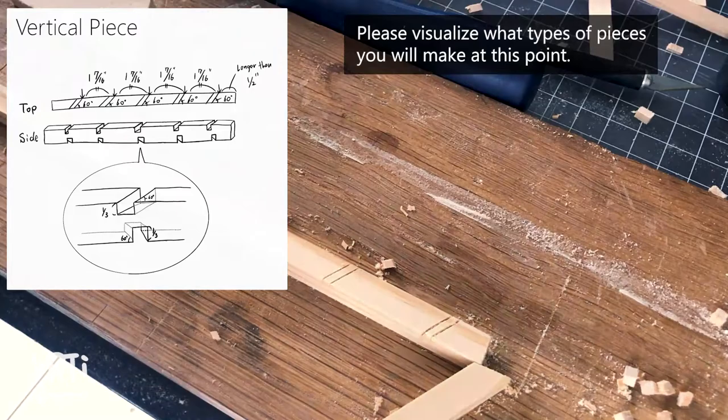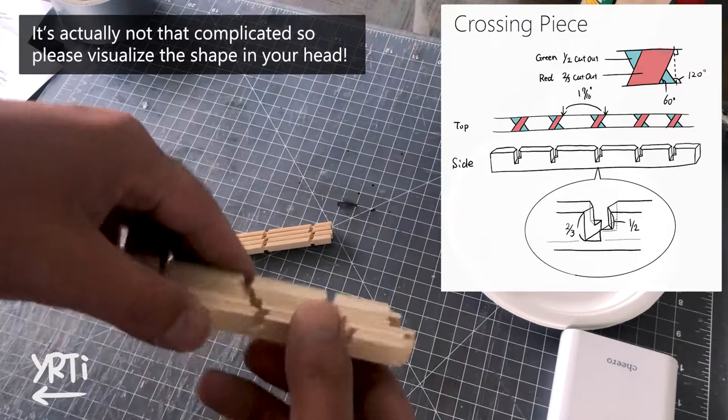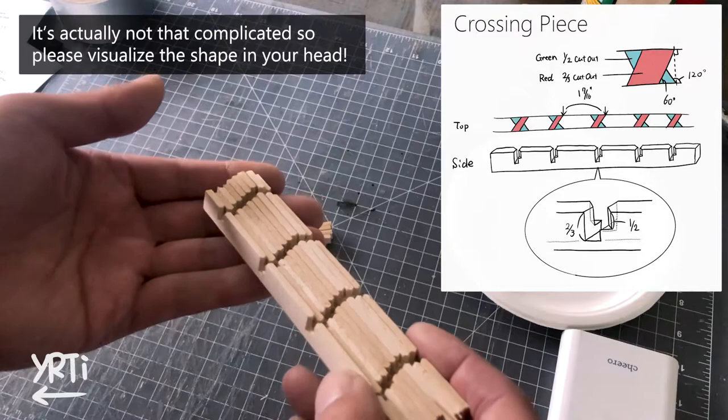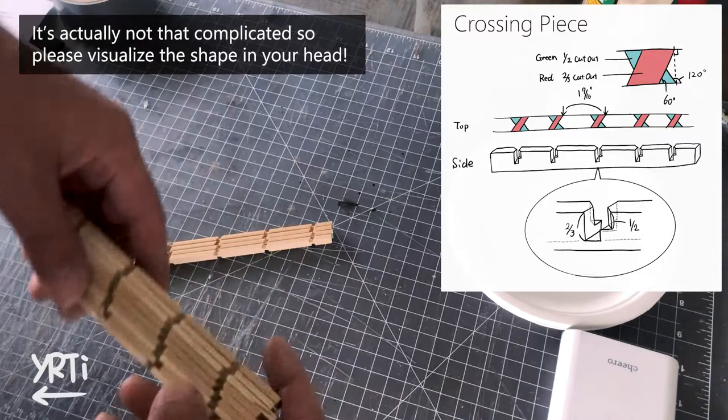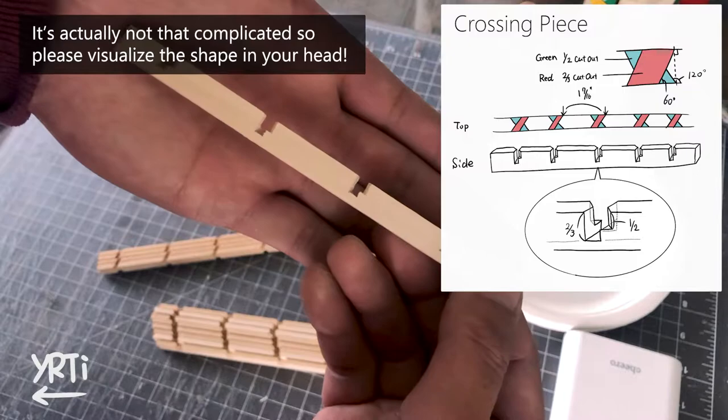Now, the crossing pieces. It has the 60 degree angle, which is the same as the vertical pieces. However, this strip needs a crossing line on the same side, so you need to add 120 degree cut-out. Please note, both cut-outs have the different cut-out depth. The 60 degree one is 2 third of the strip width, and the 120 degree one is half of the strip width.